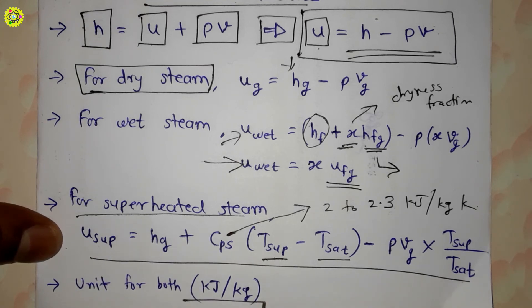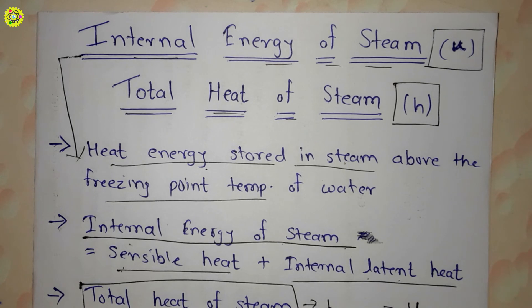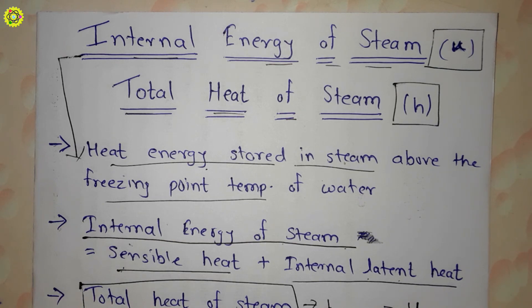The unit for both total heat and internal energy of steam is kJ/kg. In this video we have understood about internal energy of steam and total heat of steam. Thank you students for watching — please like, share, comment, and subscribe to my channel.